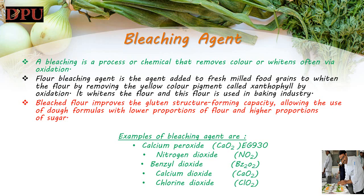Examples of bleaching agents: 1. Calcium peroxide (E932). 2. Nitrogen dioxide (NO₂). 3. Benzoyl peroxide (BZ₂O₂). 4. Calcium dioxide (CaO₂). 5. Chlorine dioxide (ClO₂).